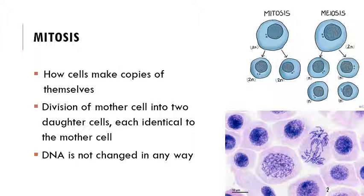Mitosis is basically how cells make copies of themselves. There's a lot of gendered terminology here, like mother cells and daughter cells. The mother cell is the original starting cell that then makes a copy of its DNA and divides into two daughter cells that are completely identical to the mother and to each other. We distinguish this from meiosis, which happens at completely different times in an organism's life and produces different types of cells. Mitosis and meiosis are about as unrelated as you can get, and they are structurally very different.